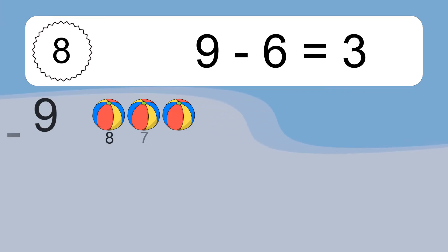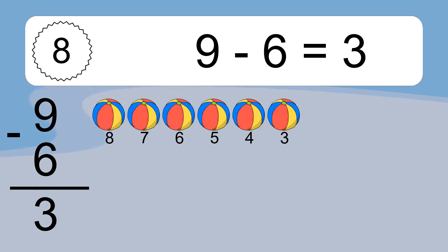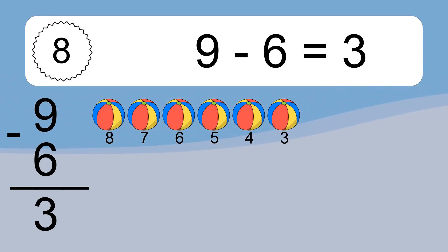9 minus 6 equals what? 9 minus 6 equals 3. Let's count it. 8, 7, 6, 5, 4, 3.